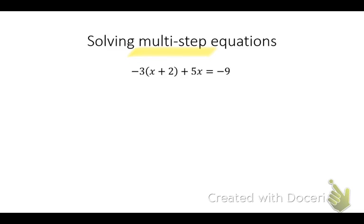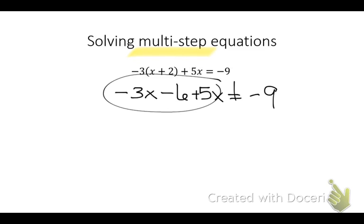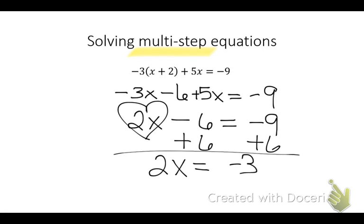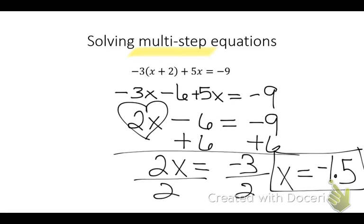Negative 3x minus 6 plus 5x equals negative 9. How did you guys do on combining like terms this time? Negative 3x plus 5x is what? 2x minus 6 equals negative 9. Where does my heart go? Around the 2x. Now I add 6 to both sides. Watch your integer rules. What's negative 9 plus 6? Negative 3. 2x equals negative 3. Divide both sides by 2. You can leave it negative 3 over 2 or you can say negative 1 and a half. All of those answers would be accepted.